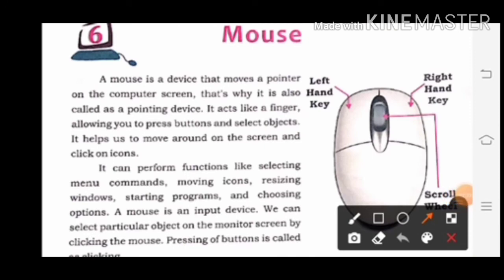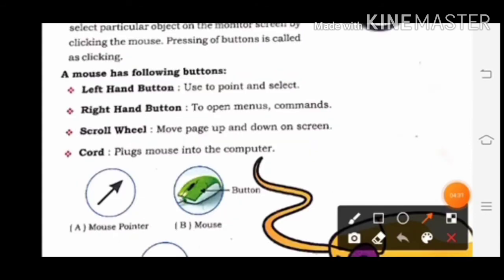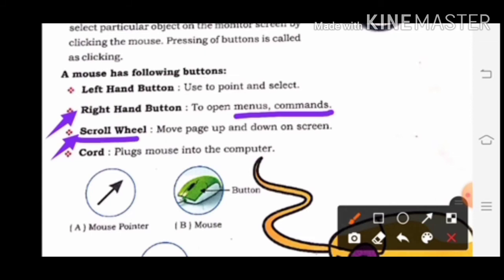यहाँ पर आप देख सकते हो कि ये left hand button है और ये right hand button है। Right hand button का use किस लिए होता है? To open menus and commands. Computer में जो menu और commands होते हैं, उन्हें open करने के लिए हम right hand button का use करते हैं। Third one is scroll wheel — move page up and down on screen. Screen पर page को up और down करने के लिए scroll wheel का use किया जाता है।